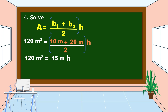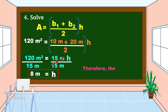Bring down 120 square meters. To find h or the height, we're going to divide both sides of the equation by 15 meters. So 15 meters divided by 15 meters cancels out, and the remaining item on the right side is h. On the left side, 120 square meters divided by 15 meters equals 8 meters. Therefore, the height of the trapezoidal park is 8 meters.